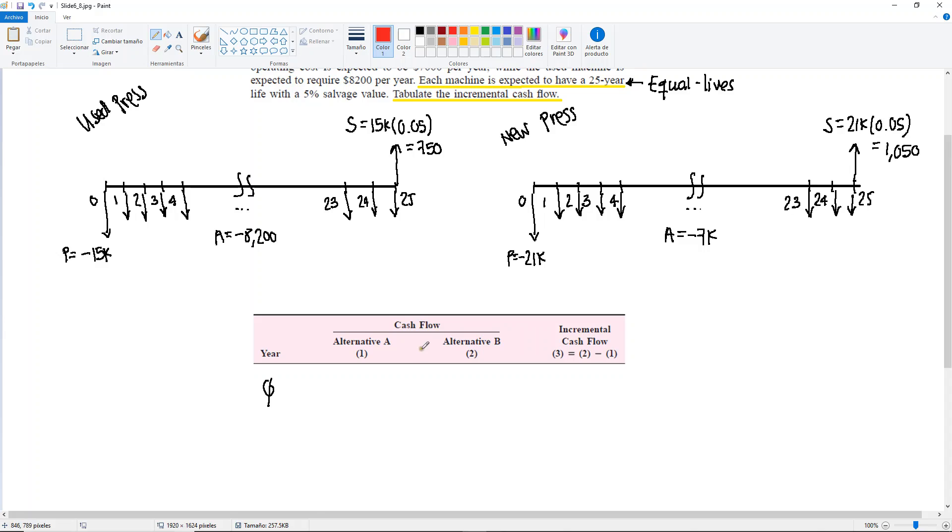We said that the one with the highest initial investment is going to be alternative B. Which one requires a higher investment? The new press. So alternative B will be the new press, and alternative A will be the used one. Now that we listed that, let's write down what we have in year 0. In year 0, I have minus 15,000, and over here I have minus 21,000.